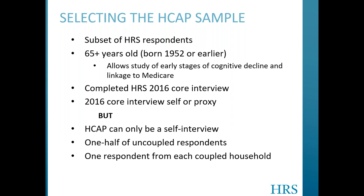Now we'll turn to talking about the HCAP study design. In the HRS, the HCAP sample was randomly selected from HRS panel respondents who are age 65 or older, that is, whose birth year was 1952 or earlier. Study entry at age 65 was chosen to increase the likelihood of detecting early stages of cognitive decline. Age 65 also marks the age of Medicare eligibility, allowing access to medical records for those who consent to linkage, which for the HCAP sample is about 90% of the sample. HCAP respondents had completed their 2016 core interview prior to eligibility for the HCAP. The selected respondent could have had a proxy HRS interview in 2016, but the HCAP interview itself did not use proxy respondents.